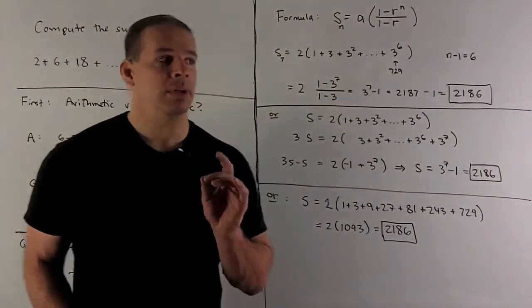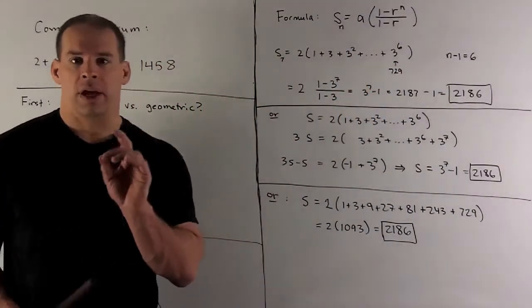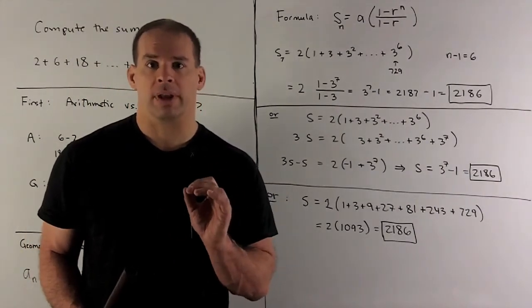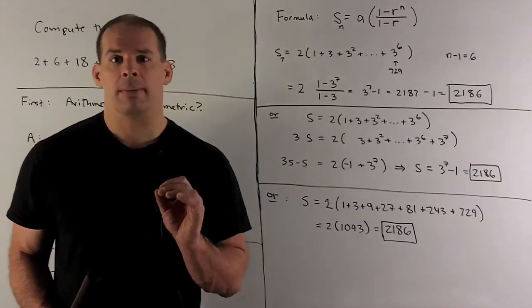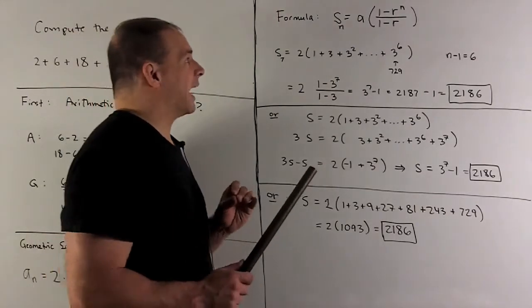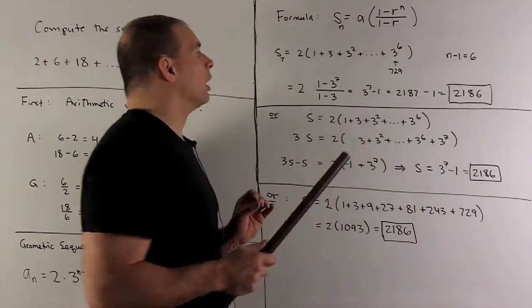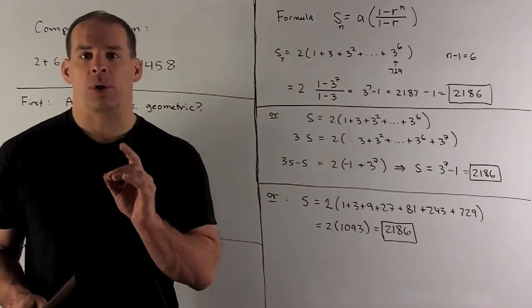Now, how about the sum? Got a few ways to get the sum here. First way, you can just look up your formula. If I take the sum of the first n terms, the formula is given by a, 1 minus r to the n over 1 minus r. So you need to figure out what your n is.